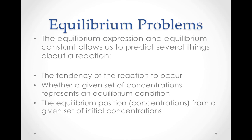The equilibrium constant and the equilibrium expression will allow us to predict several things about a chemical reaction. One of those things is the tendency of the reaction to occur — that's something we'll look at later in a discussion of thermodynamics. The others will be considered in this video: whether a given set of concentrations represents a reaction at equilibrium, and how to determine the equilibrium position from a given set of initial conditions.